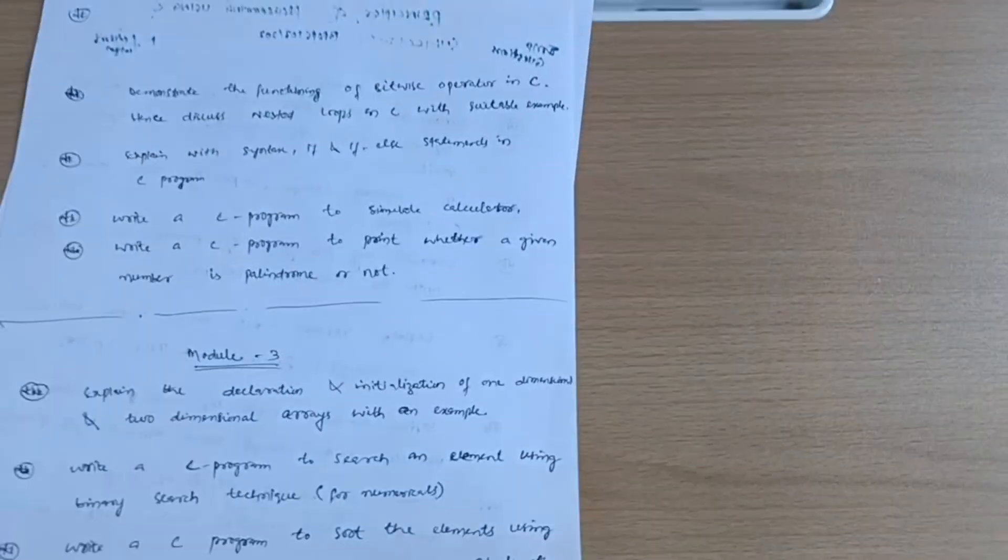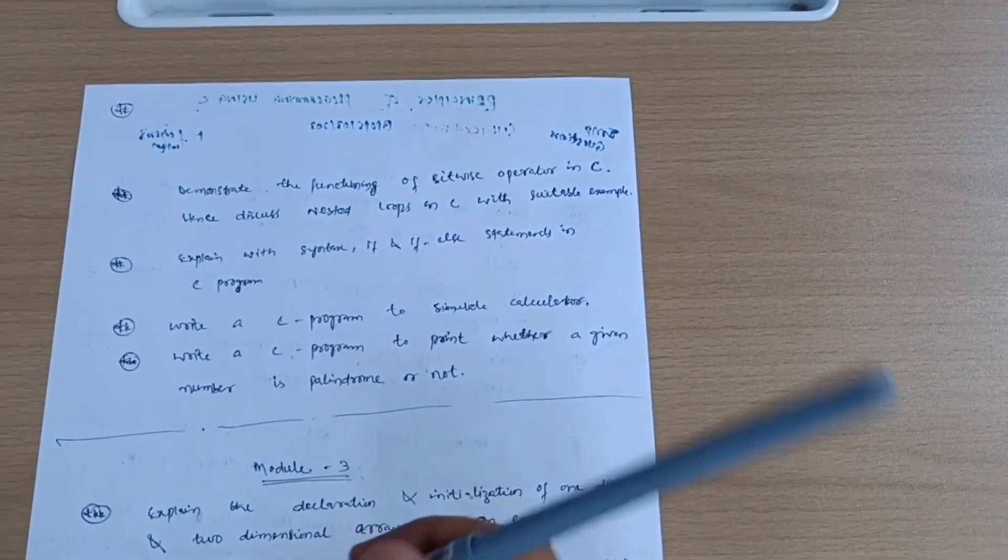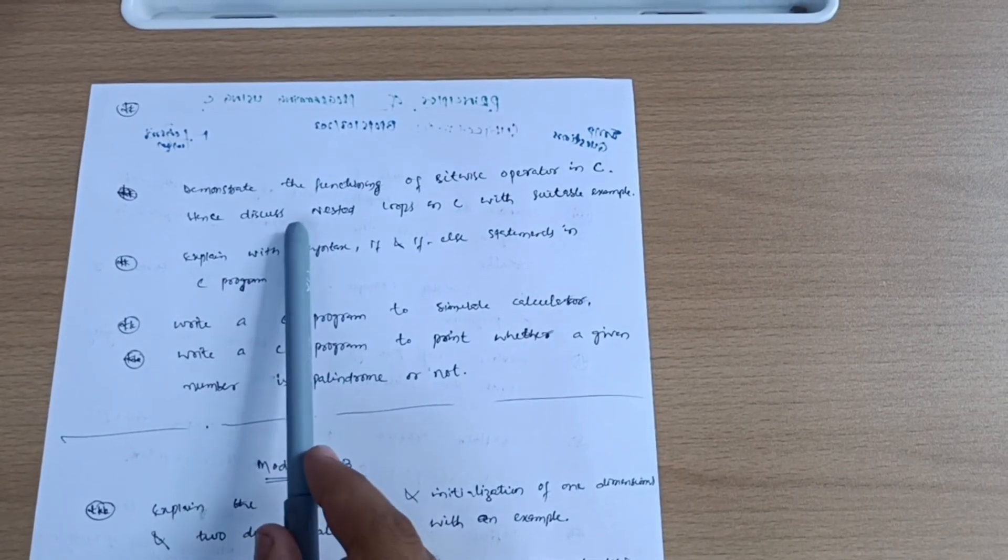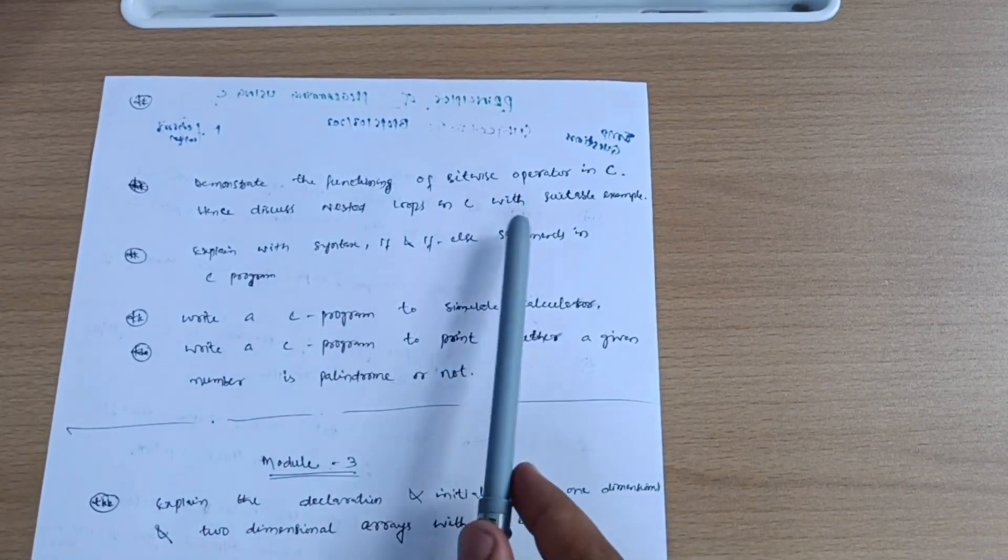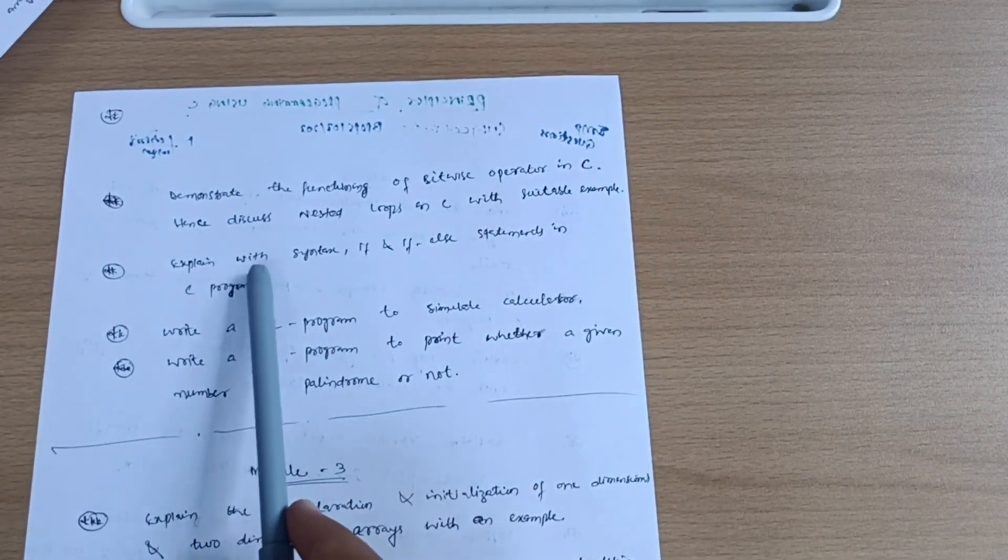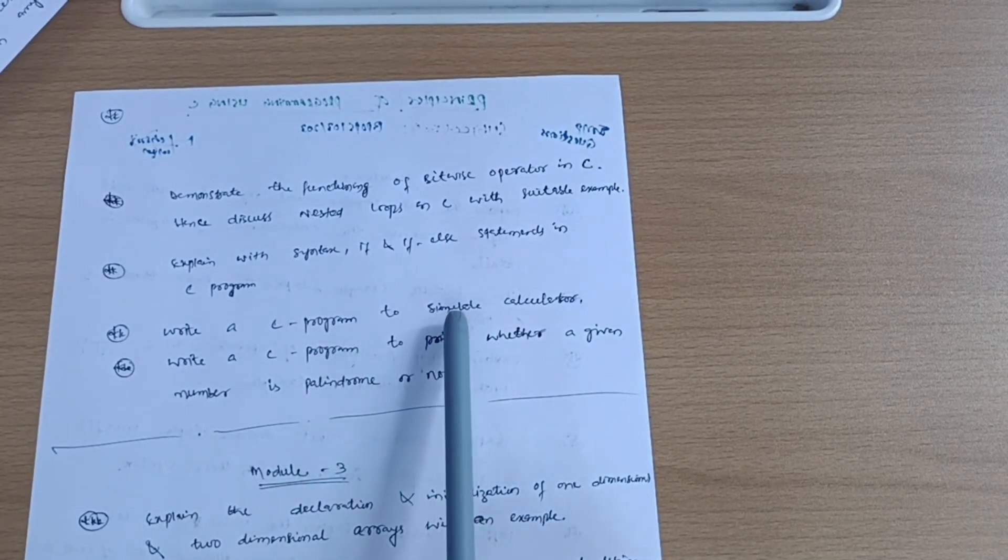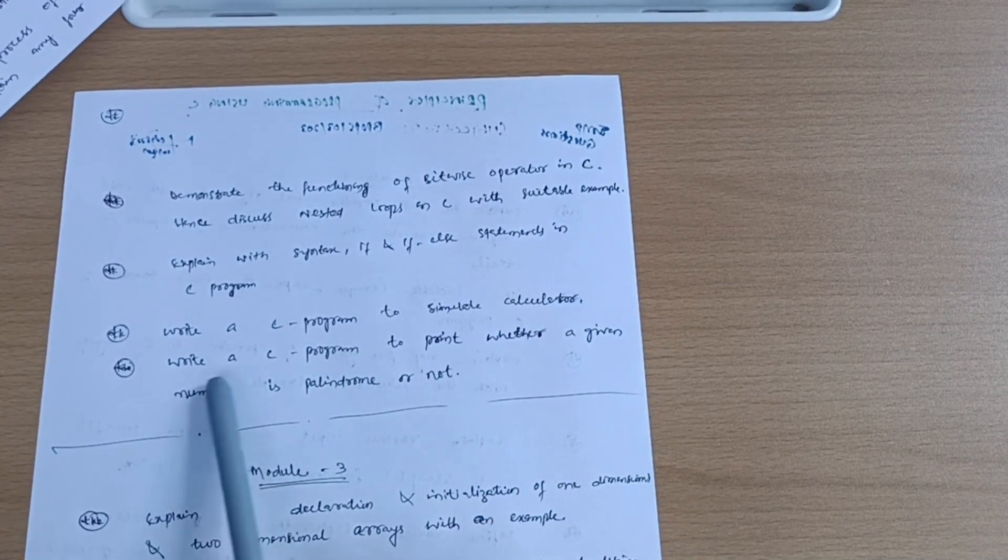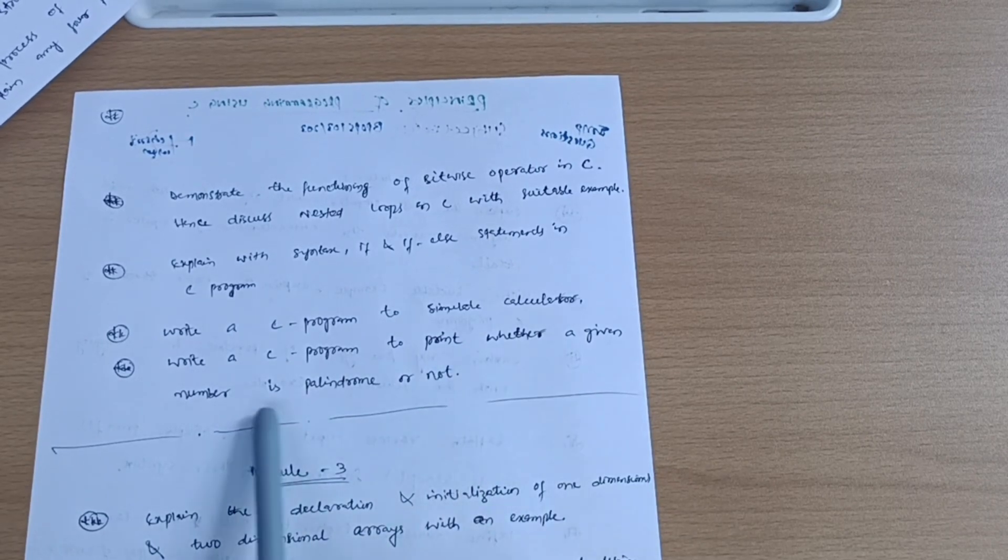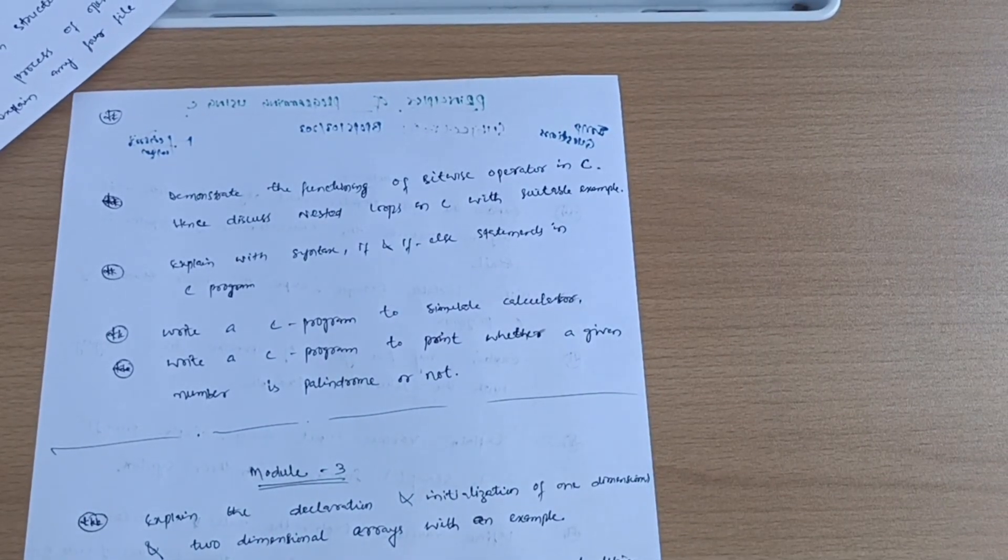Demonstrate the functioning of bitwise operators in C, discuss nested loops in C with suitable example, explain with syntax if and if-else statements in C program, write a C program to simulate calculator, and sometimes write a C program to print whether a given number is palindrome or not. This much is enough about module second.